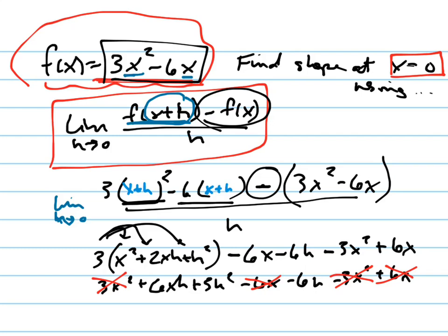And nothing else goes away. So I'm left with, and remember all of this was over h. I was just kind of simplifying the top. So I'm left with the limit as h goes to 0 of 6xh plus 3h squared minus 6h all over h. And what can I cancel out of everything now? H. Can cancel an h out.